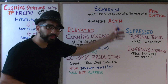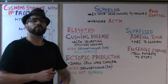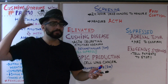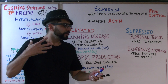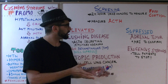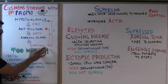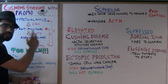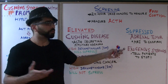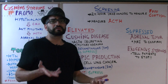If ACTH levels are suppressed, the problem is not in the pituitary gland and not an ectopic source like small cell lung cancer. The problem may be in the adrenal glands themselves — an adrenal tumor producing too much cortisol. That excess cortisol feeds back to the anterior pituitary, inhibiting ACTH production, which is why ACTH is suppressed. You then do an MRI to confirm and schedule the patient for surgery to remove the tumor if necessary.